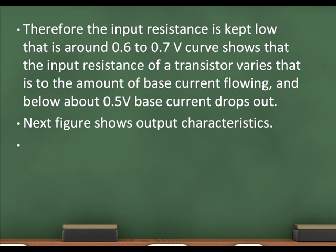Therefore the input resistance is kept low. The 0.6 to 0.7 V curve shows that the input resistance of a transistor varies according to the amount of base current flowing, and below about 0.5 V the base current drops out.